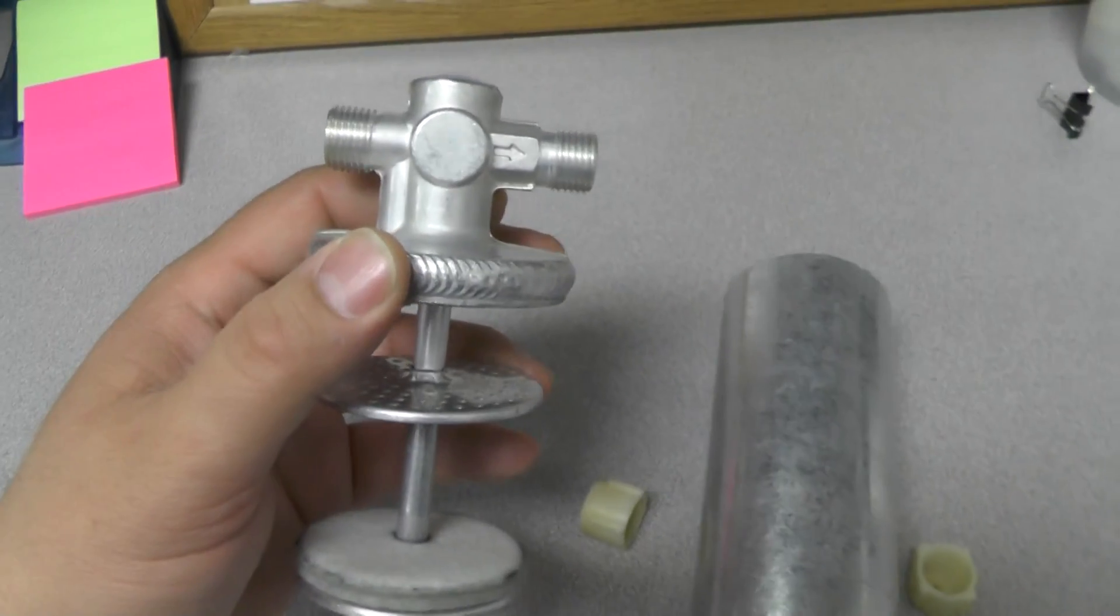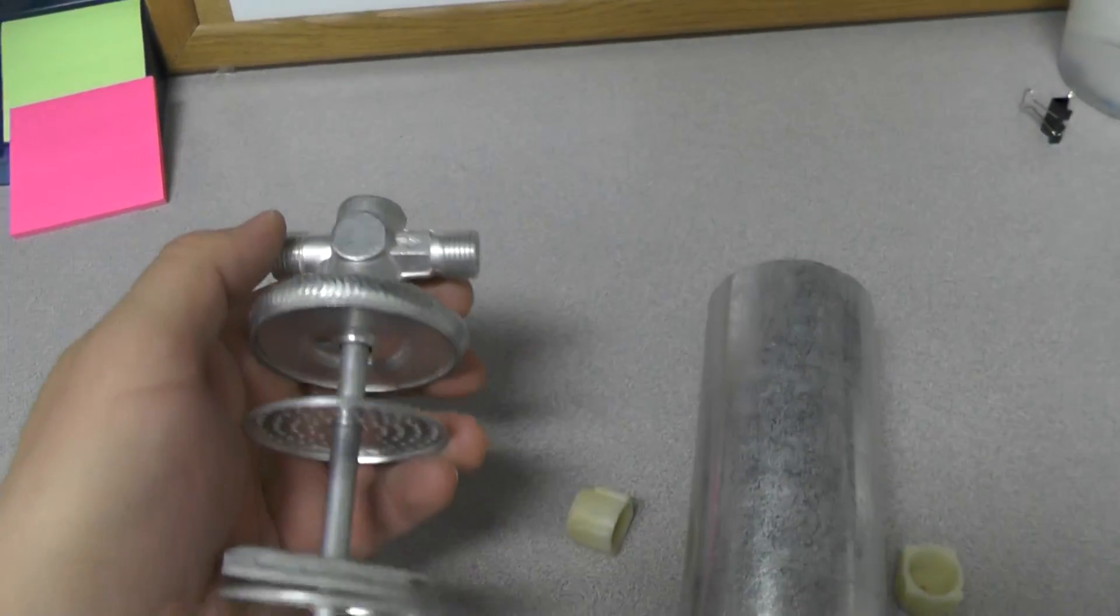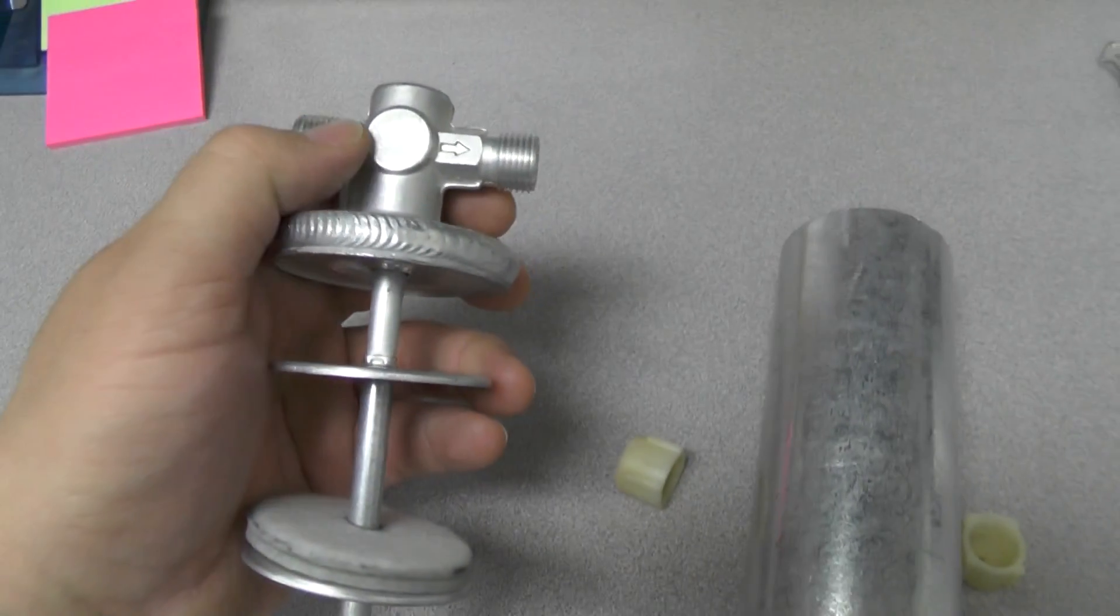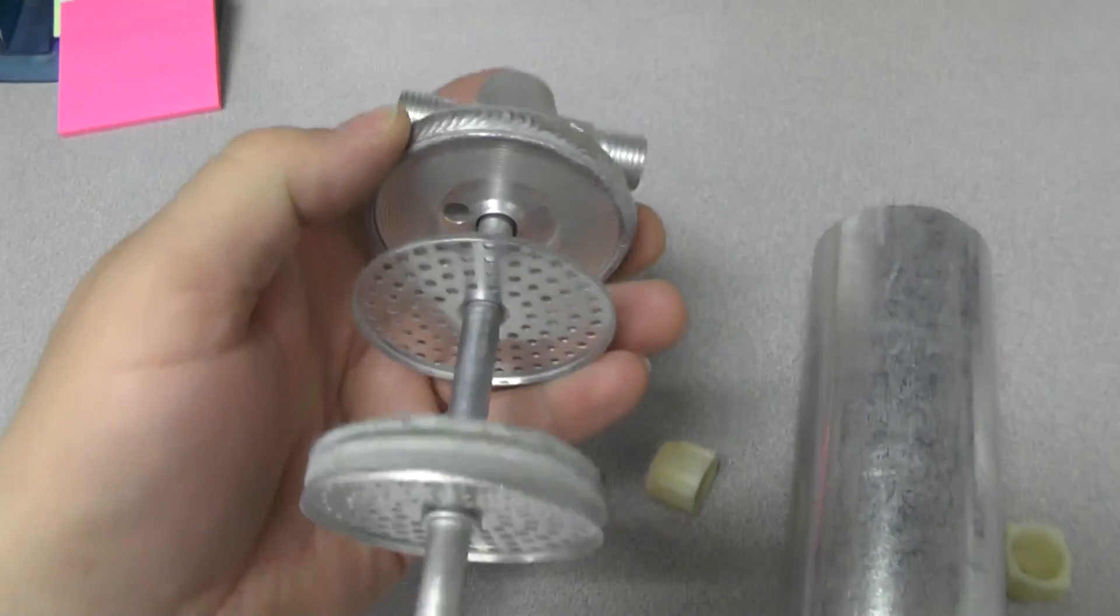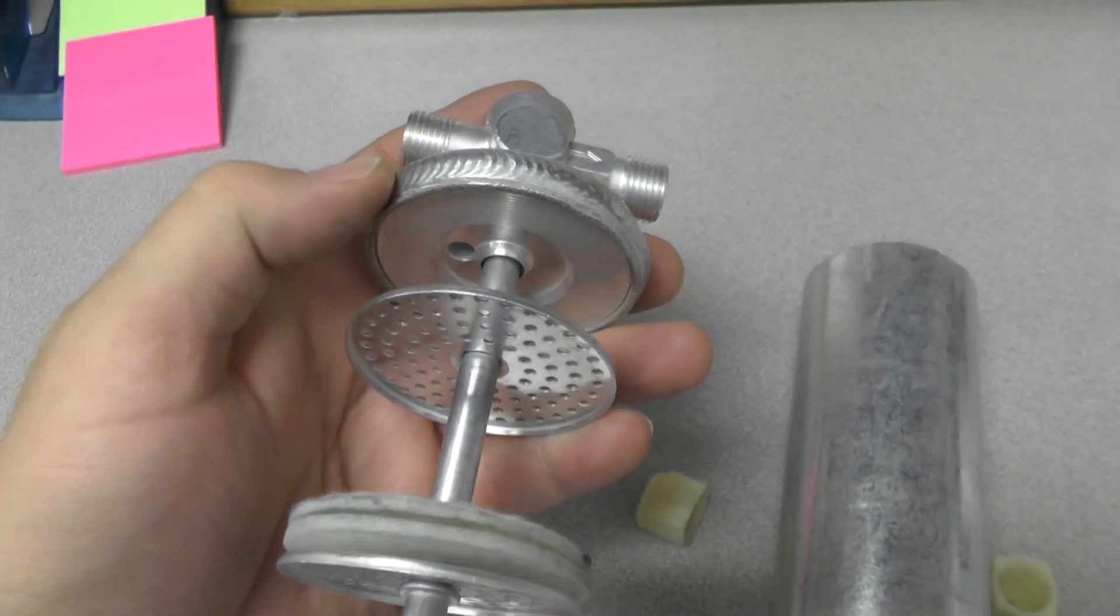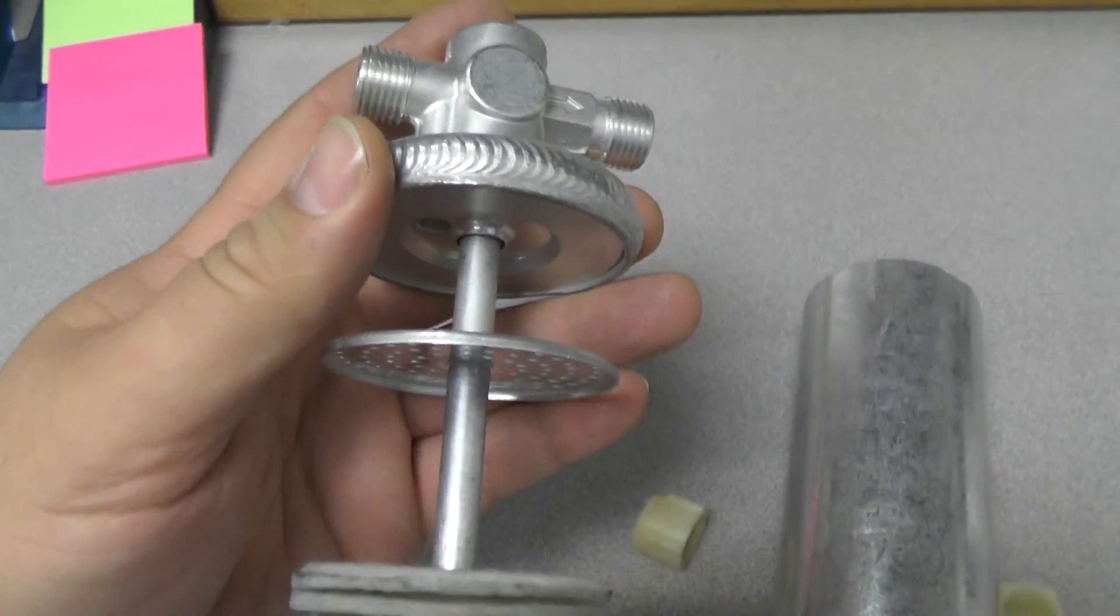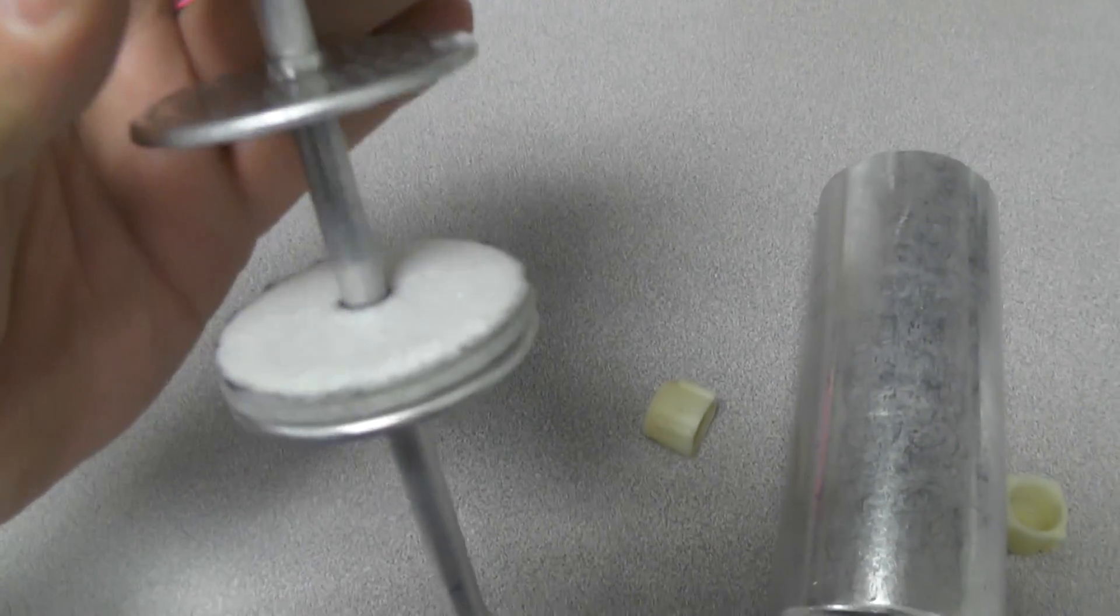If refrigerant comes in here, what happens is it comes in, goes down, and then comes out through that little hole right there. Then the refrigerant has to pass through this set of screens and filters.